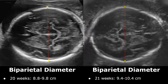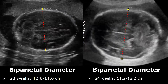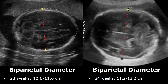The BPD value can be between 8.8 to 9.8 cm by 20 weeks, and by 21 weeks this can be between 9.4 to 10.4 cm. At 23 weeks, the BPD value can be between 10.6 to 11.6 cm, and by 24 weeks this value can be between 11.2 and 12.2 cm.